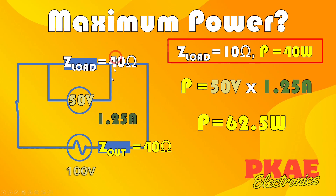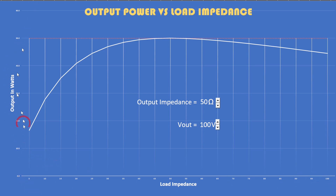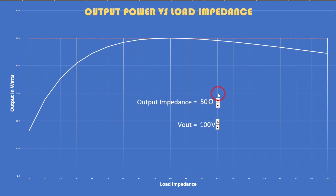So there you go — matching the impedance does give you more power. Now let's see if that holds in all scenarios. I've put together this chart where we have an output impedance of 50 ohms and a supply voltage of 100 volts. Along the bottom I've got various load impedances scaling from 0 to 100 ohms, and on the y-axis the output in watts. With 50 ohms output impedance, the output power maxes out right at 50 ohms load impedance, then curves off.